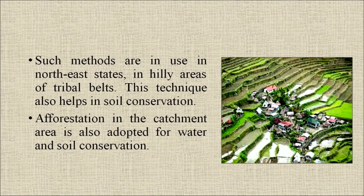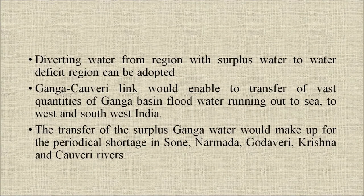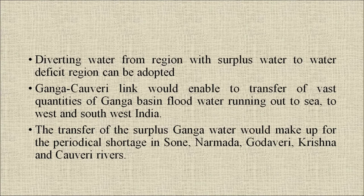Afforestation in the catchment area is also adopted for water and soil conservation. The next technique is inter-basin transfer of water. Areas in the western and peninsular region have comparatively low water resources, while northern and eastern regions drained by the Ganga and Brahmaputra have substantial water resources. Diverting water from regions with surplus water to water-deficient regions can be adopted; the Ganga-Cauvery link would enable transfer of vast quantities of Ganga basin flood water running to sea, to west and southwest India.